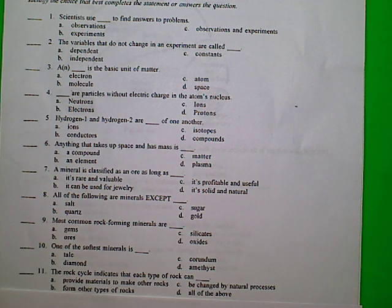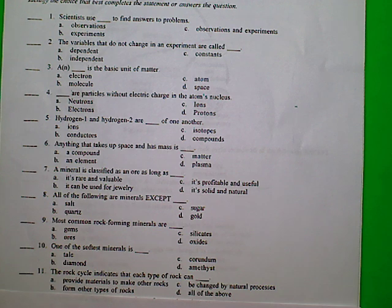11. The rock cycle indicates that each type of rock can blank. A. Provide materials to make other rocks. B. Form other types of rocks. C. Be changed by natural processes. D. All of the above.